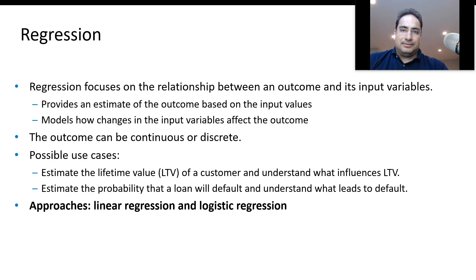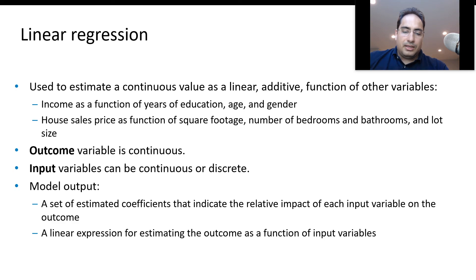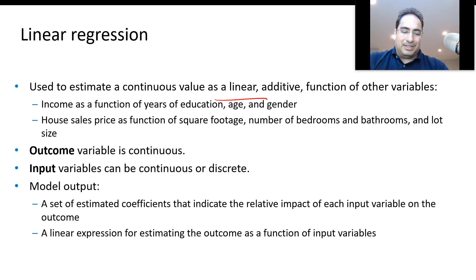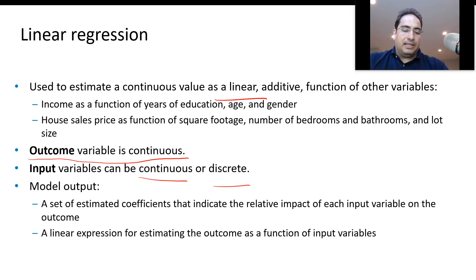Linear regression estimates a continuous value as the output based on a linear additive function of other variables. It assumes that the relationship between input and output is linear, which is an important factor. The output of the algorithm is continuous but the input can be either continuous or discrete. For example, if you want to model income as a function of years of education, age, and gender, you could use linear regression.